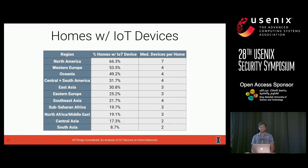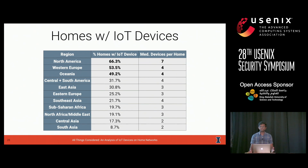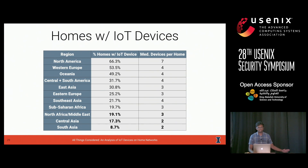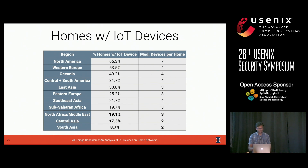Let's take a look at where the IoT devices are. What I'm showing you is a table outlining home IoT devices per region, sorted by the fraction of homes in each region that have an IoT device. At the top are North America, Western Europe, and Oceania — over two-thirds of North American homes contain at least one IoT device, with a median of seven devices per household. On the other end are South and Central Asia and North Africa and the Middle East — only 8.7% of homes in South Asia have at least one IoT device, with a median of just two devices.